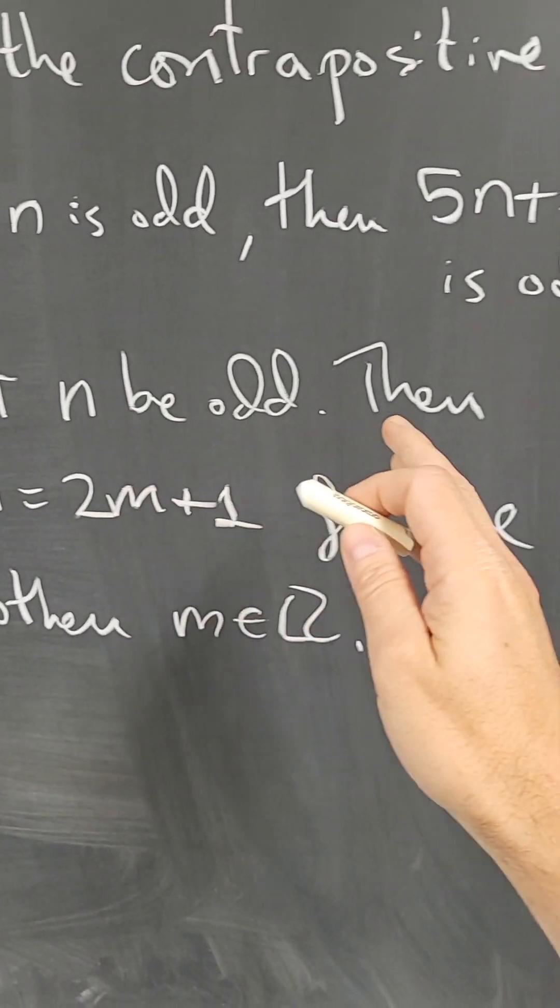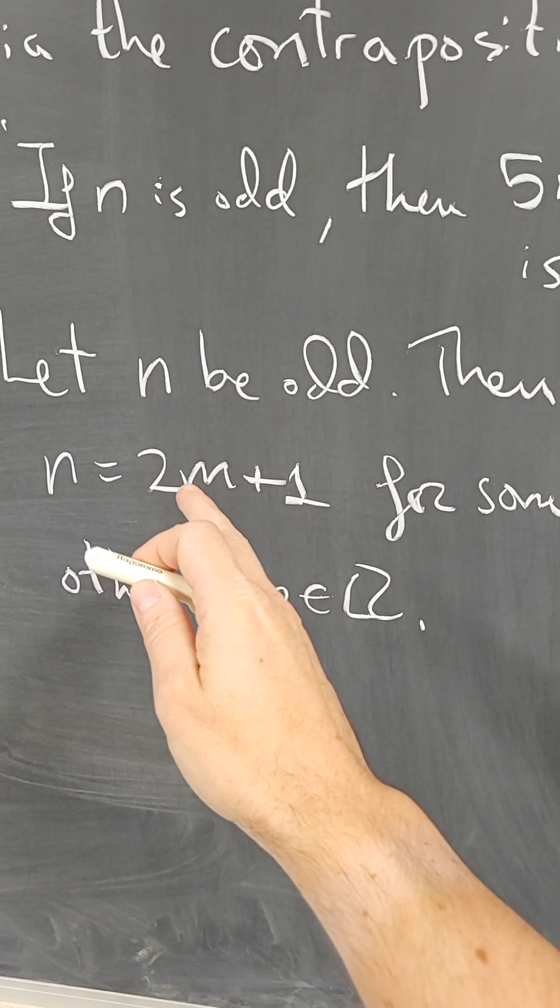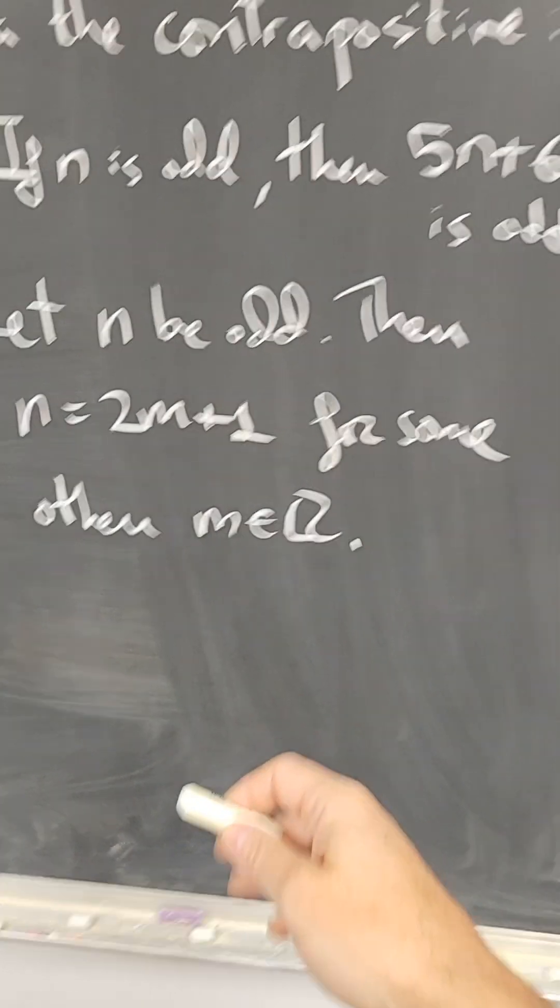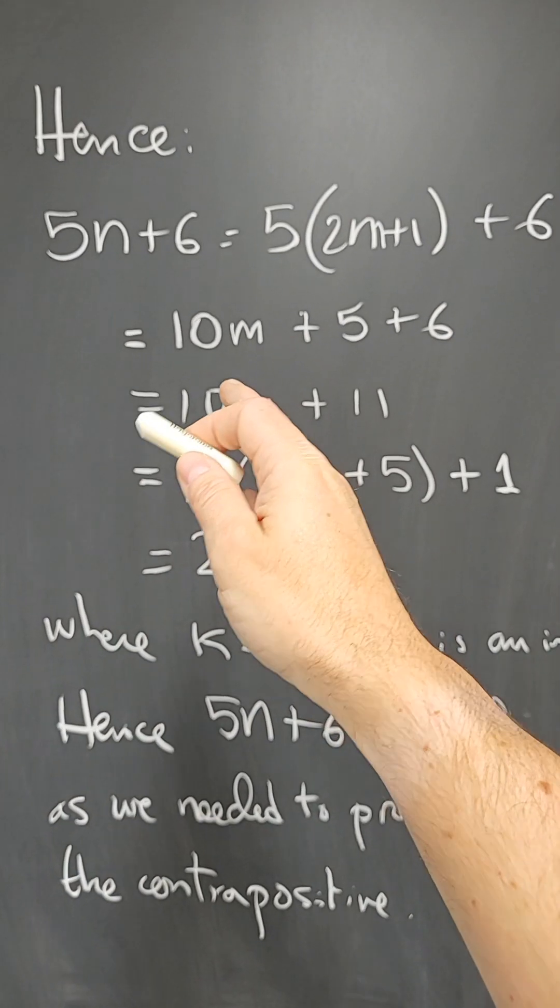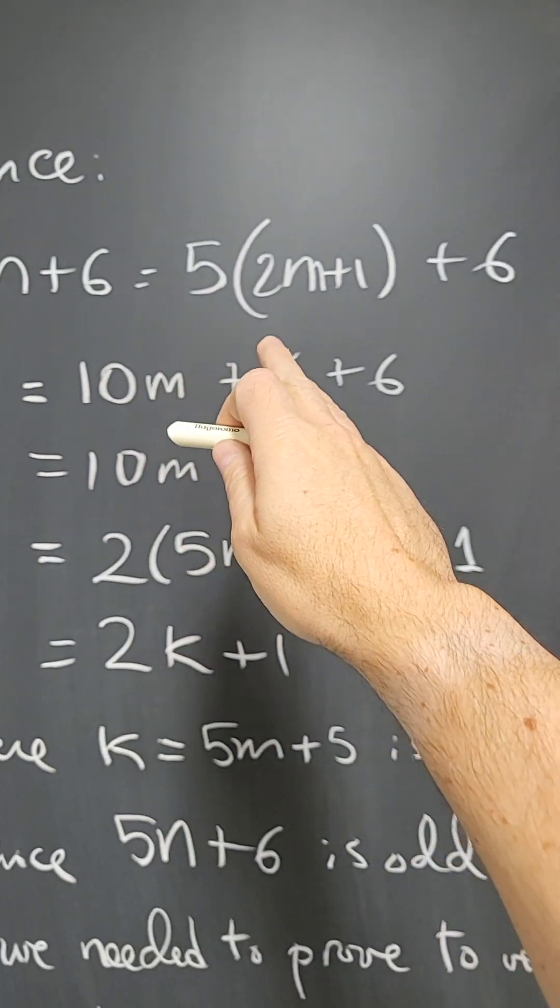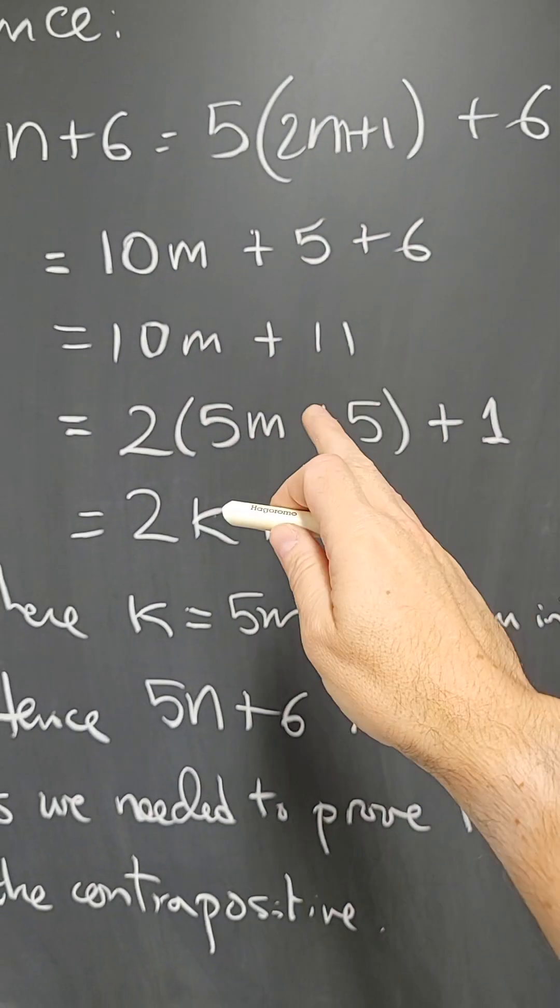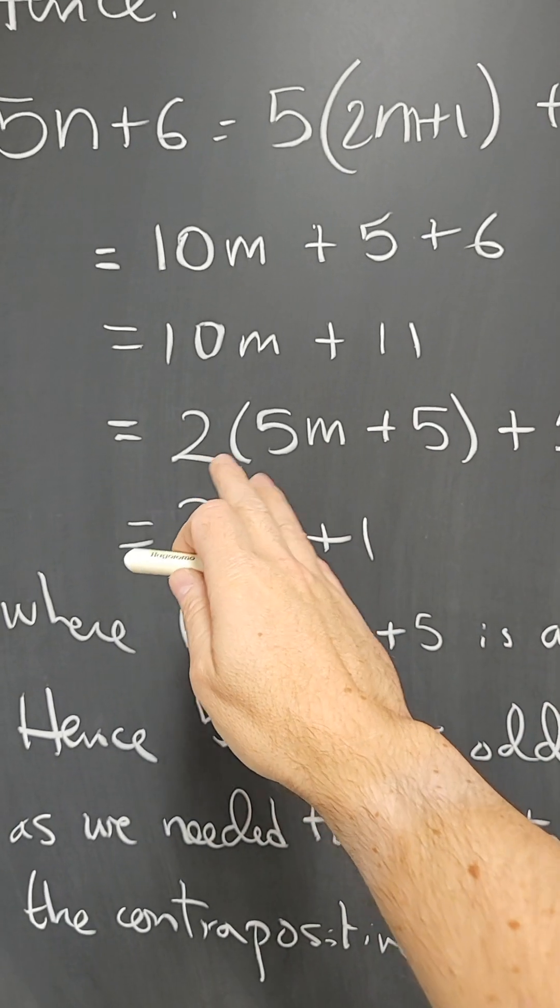Let n be odd. Then n is twice an integer plus 1 for some integer m. And therefore, 5n plus 6, I can substitute n by twice an integer plus 1.